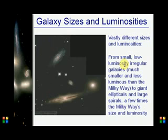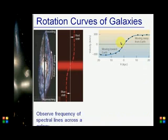Galaxies have vastly different sizes and luminosities, from smaller, less luminous irregular galaxies — much smaller than the Milky Way — to giant ellipticals and large spirals that are a few times the size of the Milky Way. There are many different sizes and many different luminosities.